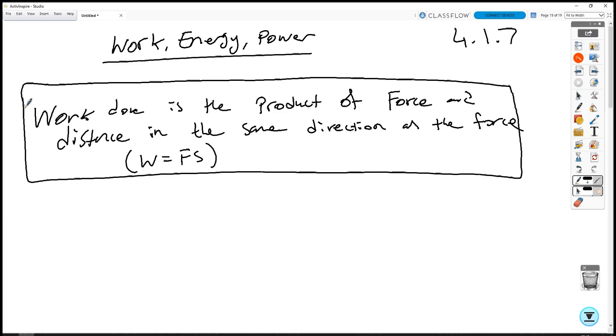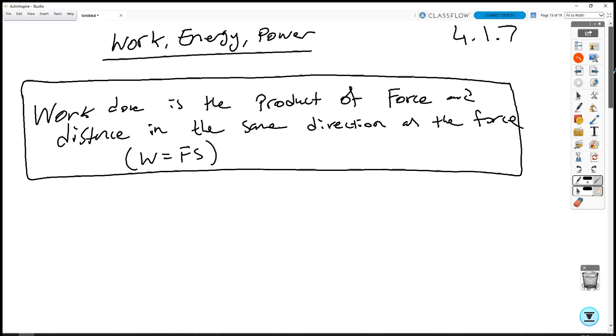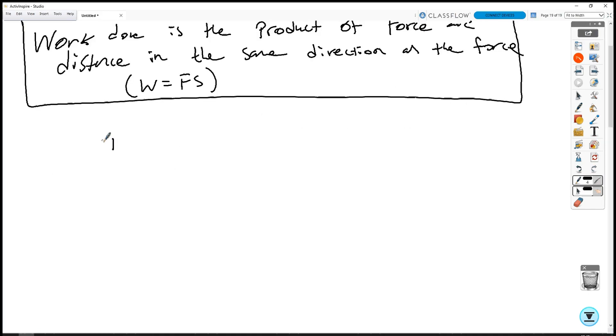This is the reason why if we analyze gravitational potential energy, it's the same as doing work. So if I lift something up by a certain height, I have done work to lift it. And the same amount of work that I've done to lift it is the same amount of gravitational potential energy that it has. This is why gravitational potential energy is the same as work done.